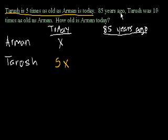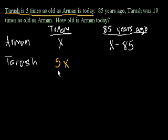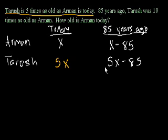85 years ago, if Armand is x today, then 85 years ago Armand would have been x minus 85. And if Tharoosh is 5x today, then Tharoosh would be 5x minus 85. I just subtracted 85 from their current age, because we're going 85 years into the past.